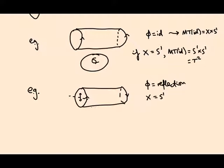And what do you get then? Well, you get the Klein bottle. You're gluing this circle to this circle in such a way that the arrows don't match up, so you end up having to pull it down and stick it back up through. That way you can get the arrows to match up, and you get the Klein bottle.